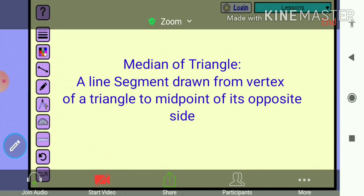A median of a triangle is a line segment drawn from vertex of a triangle to the midpoint of its opposite side.